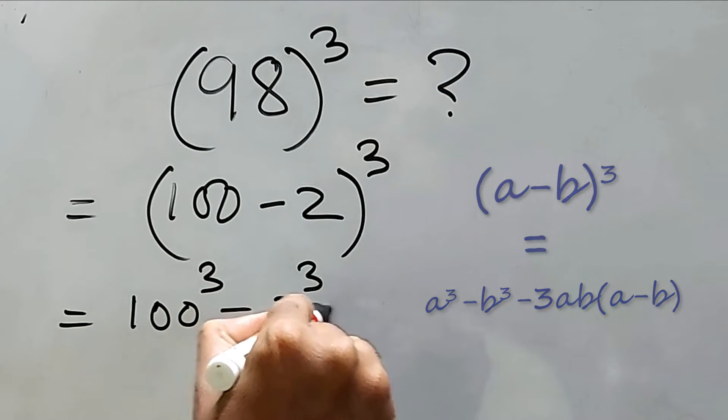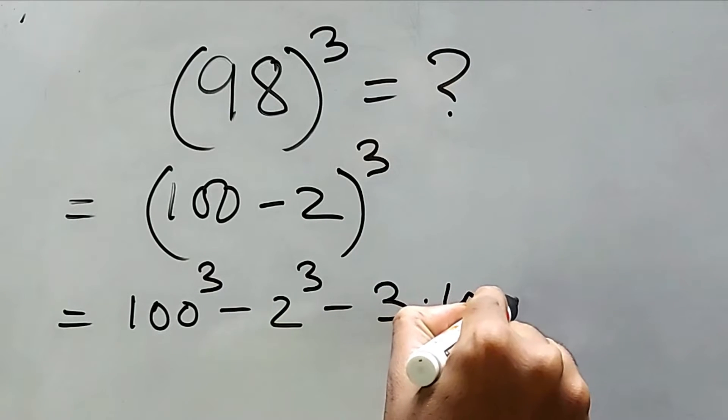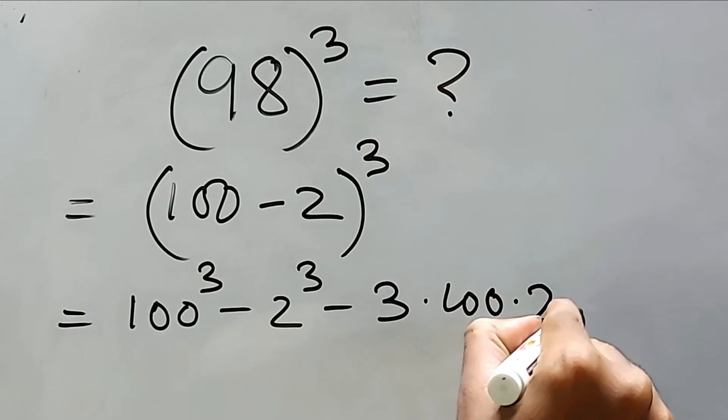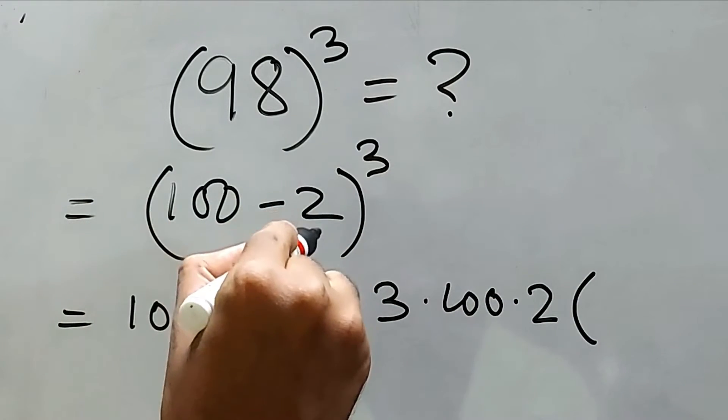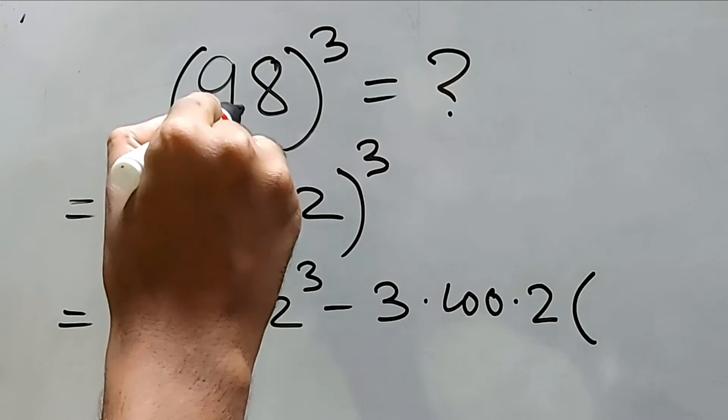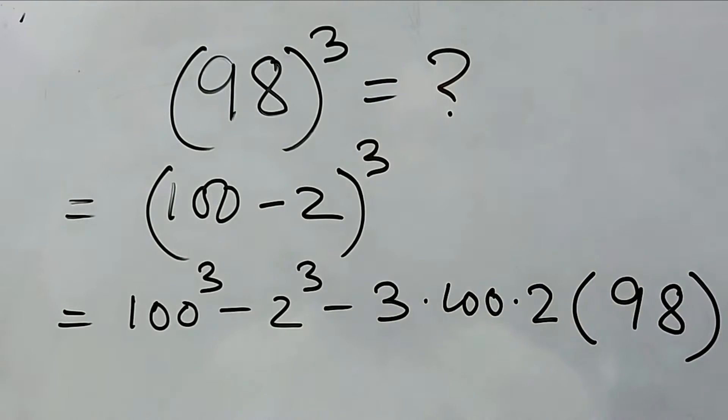This is a³ minus b³ minus 3ab into (a minus b). Now a minus b means 100 minus 2. I'm not writing it anymore. I can write it directly 98 here. So this is the formula already derived. Let's find out the answer.